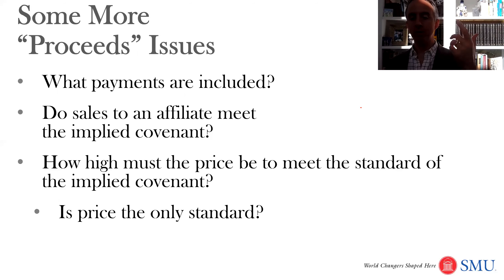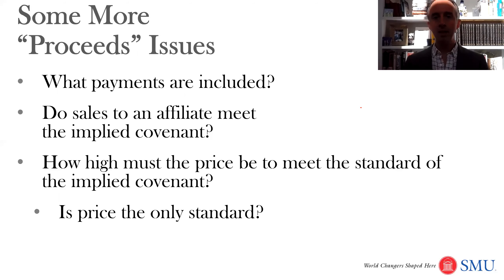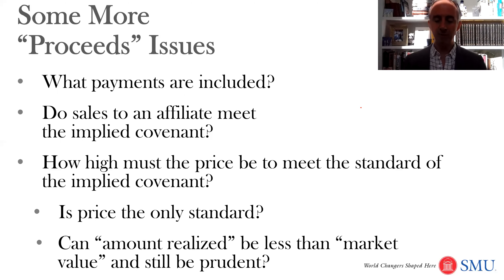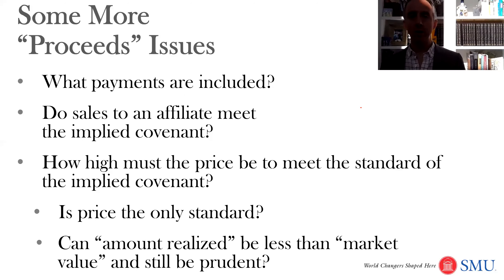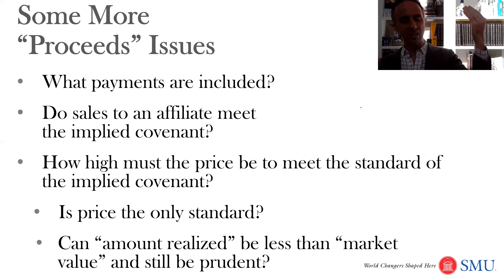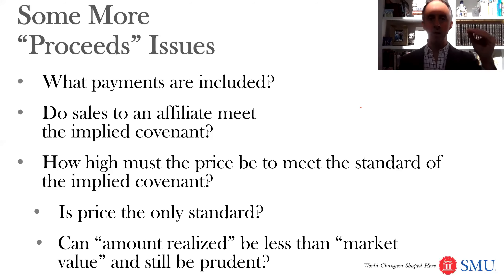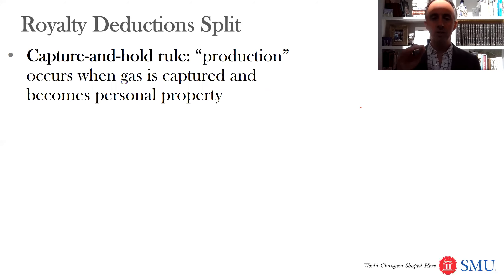How high does the price have to be to meet the standard of the implied covenant? Does it have to be the best available price, or just a reasonably high price? And is price the only standard? You might think: I didn't get a great price, but I have a guaranteed buyer for my natural gas for months to come — isn't that worth something? The overall question is: can you have an amount realized that's less than the market price and still be prudent? A lot of oil and gas companies would agree to a deal that says maybe we won't get the best possible price every time, but we have a guaranteed buyer lined up — so maybe that's worth something.